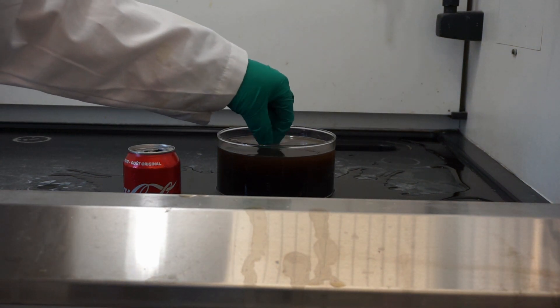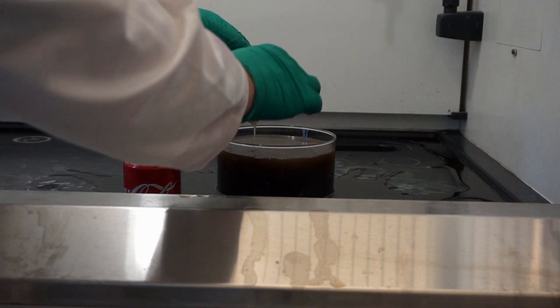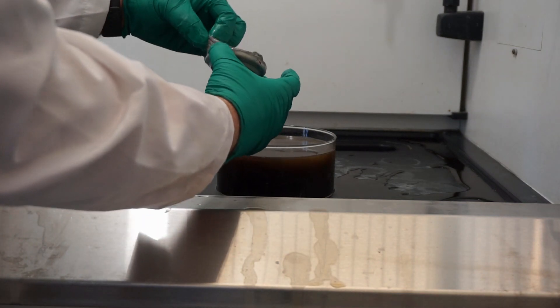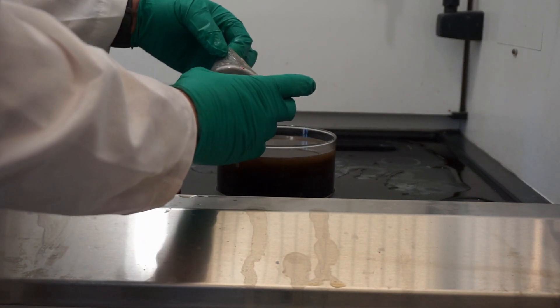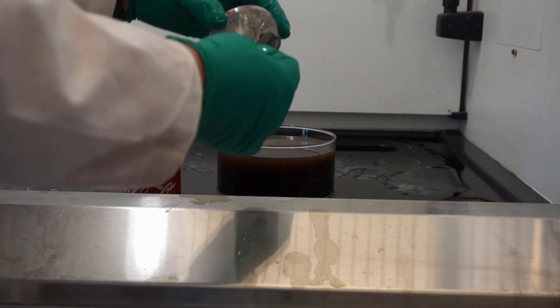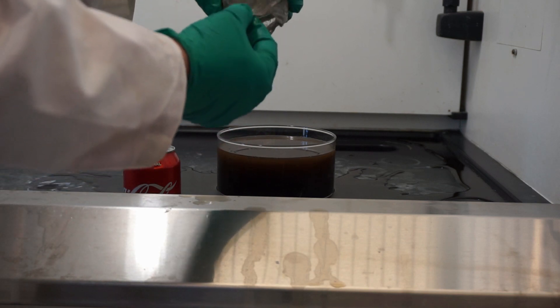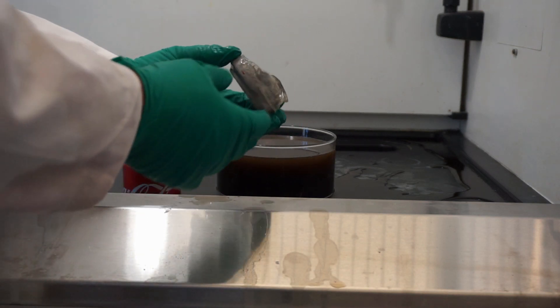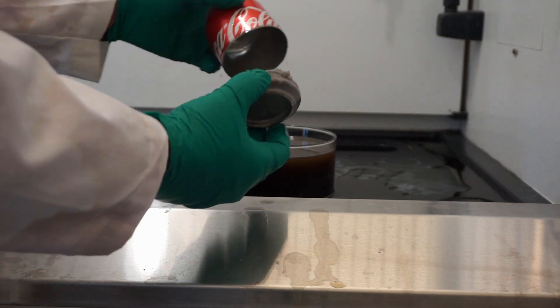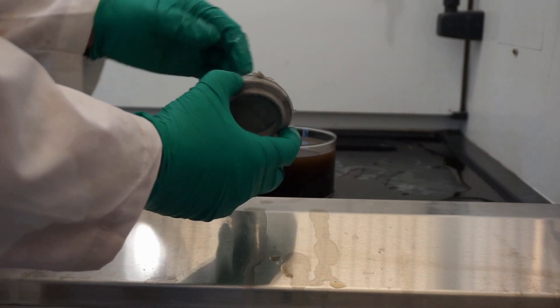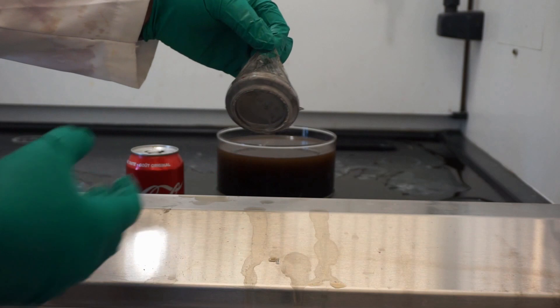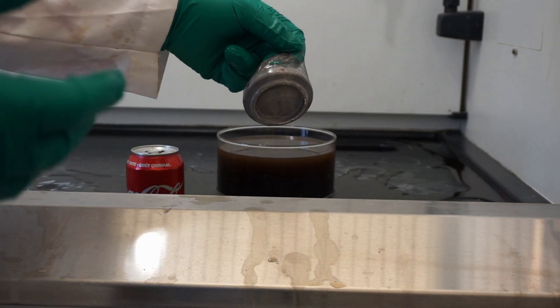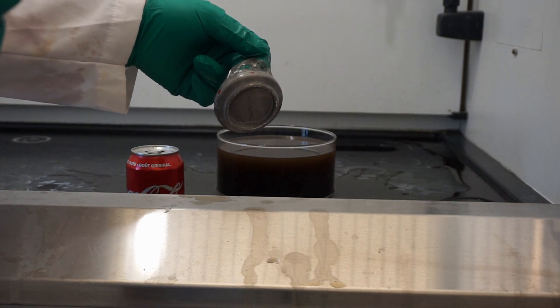So what has happened is the aluminum has been eaten away, and what we find inside of the pop can is actually a plastic liner. Now that plastic liner fits the entire inside of this because the pop is actually acidic.